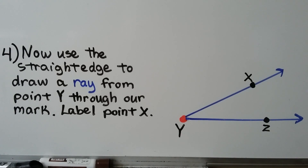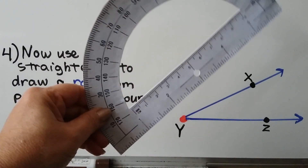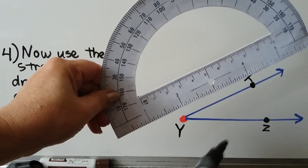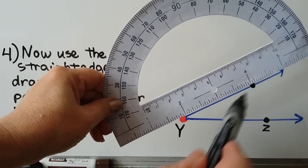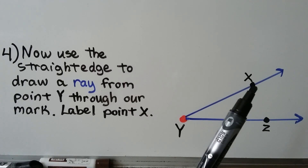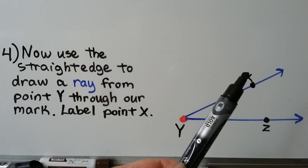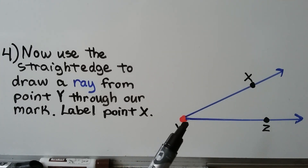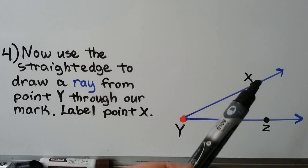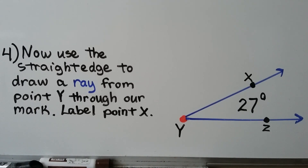We use a straight edge to draw a ray from point Y through the mark we made. We label point X anywhere on this new ray, giving us angle XYZ at 27 degrees. Since 27 is less than 90, we know this would be an acute angle.